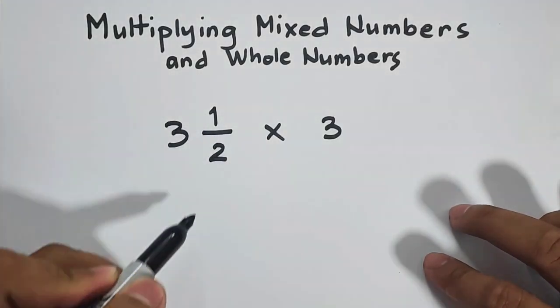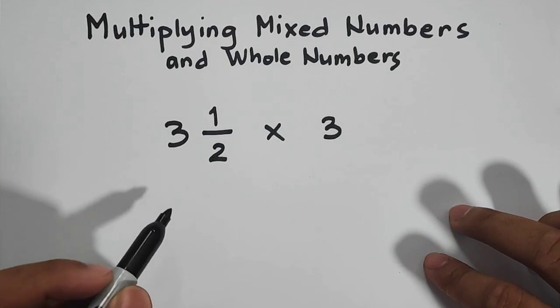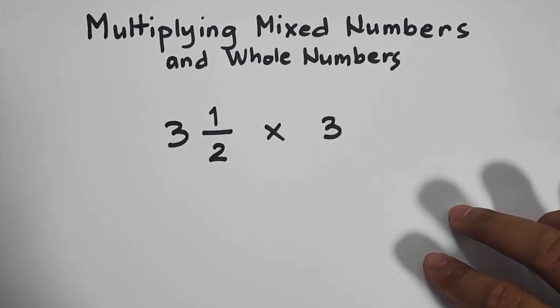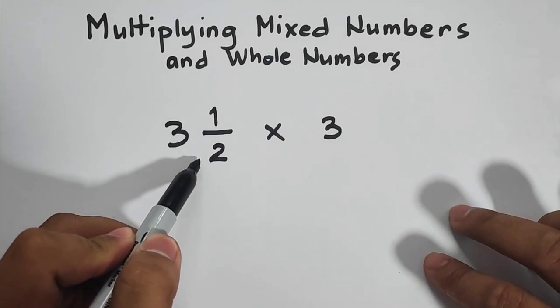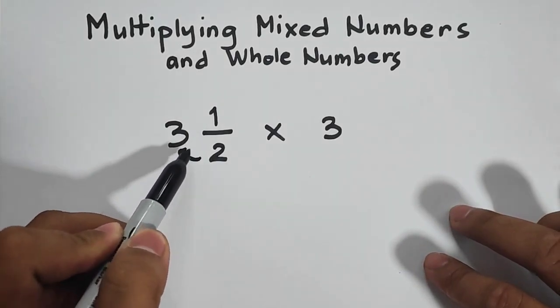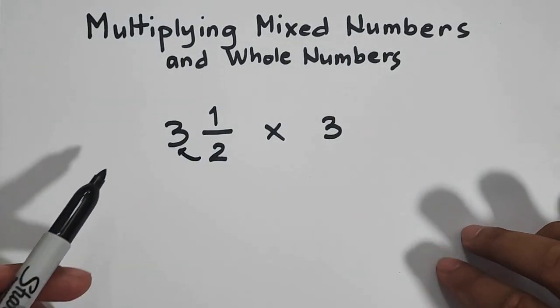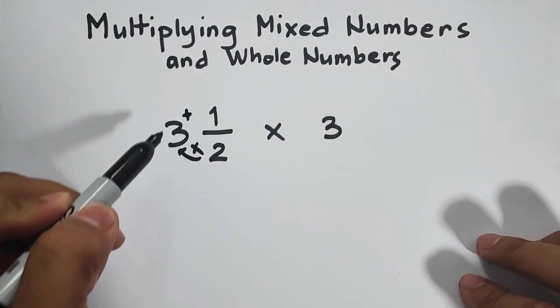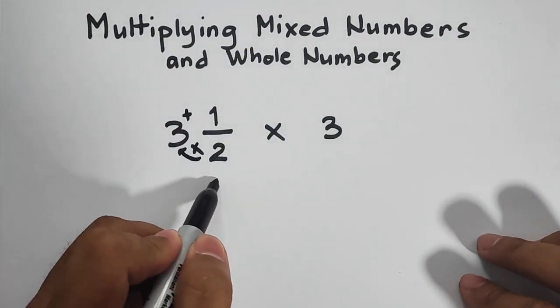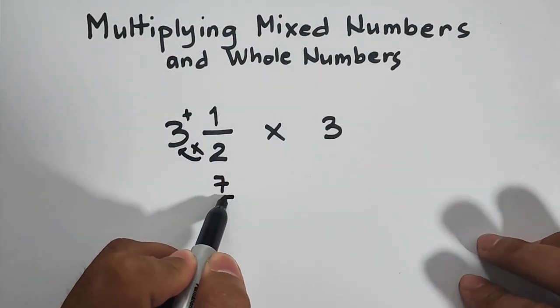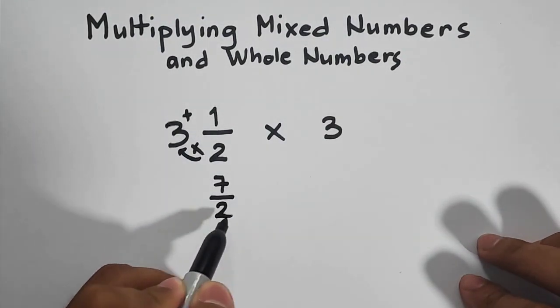First, you need to convert this mixed number into an improper fraction. So let me review you how to transform into improper fraction. First we will multiply the denominator by the whole number, which is 3 times 2. That is 6 plus 1. That would give you the answer of 7. Then copy the original denominator, which is equal to 2.